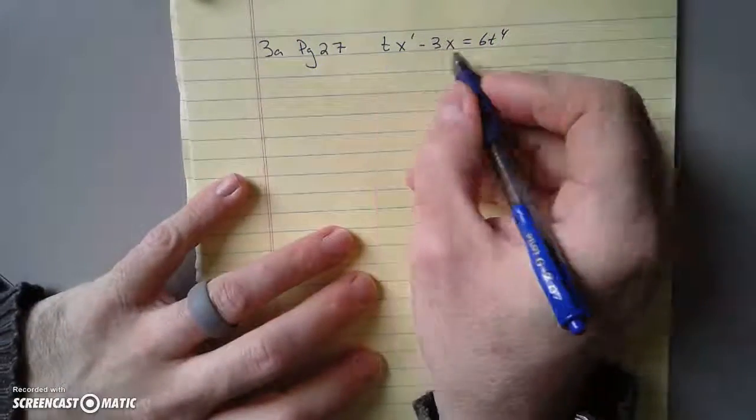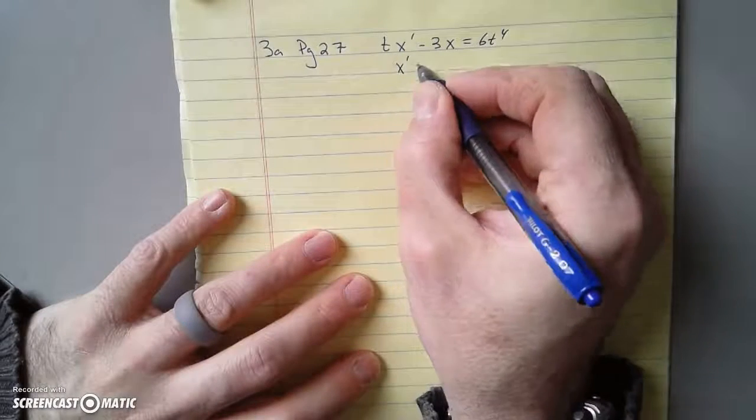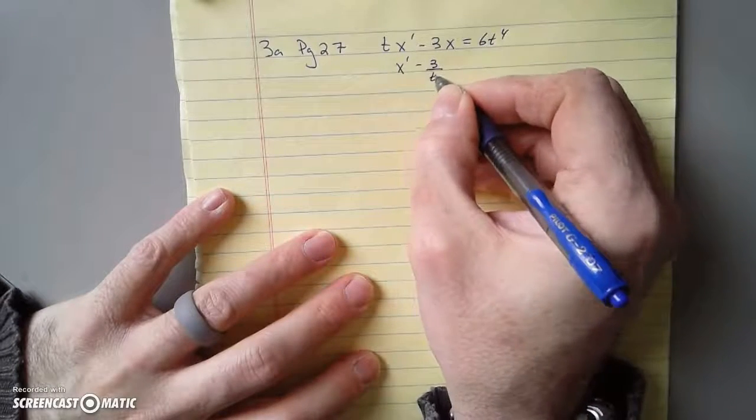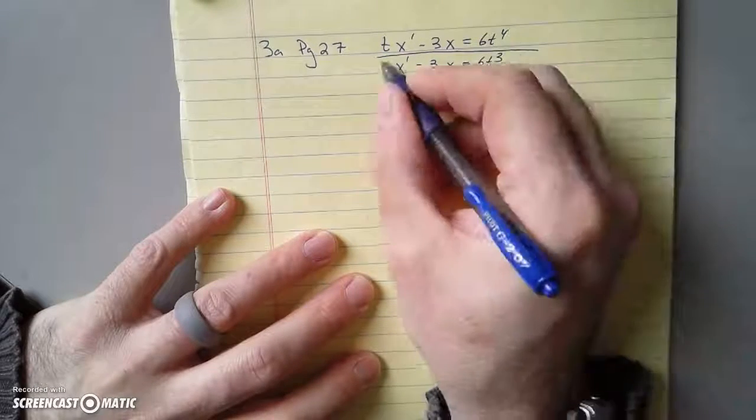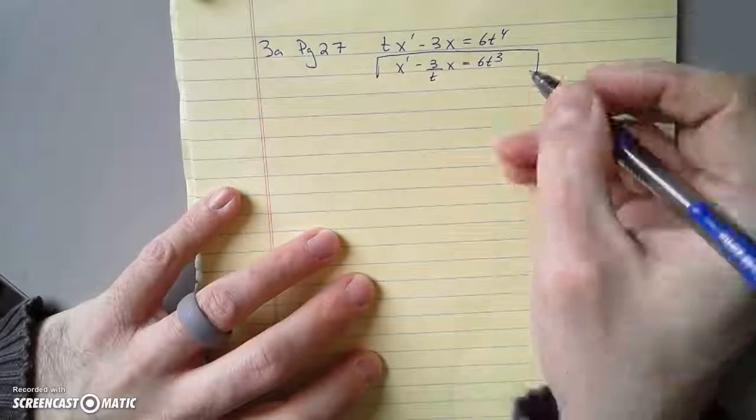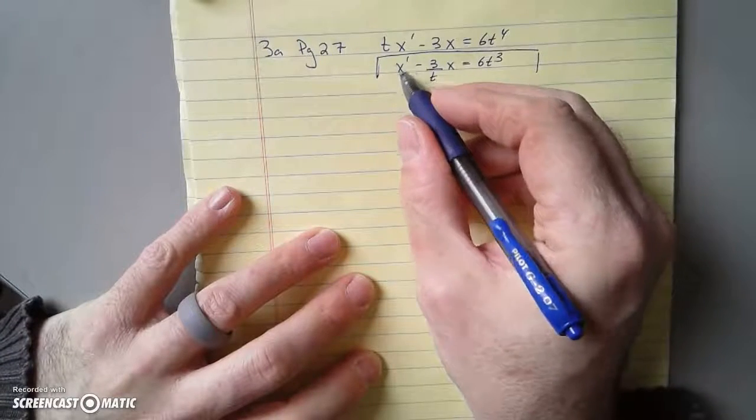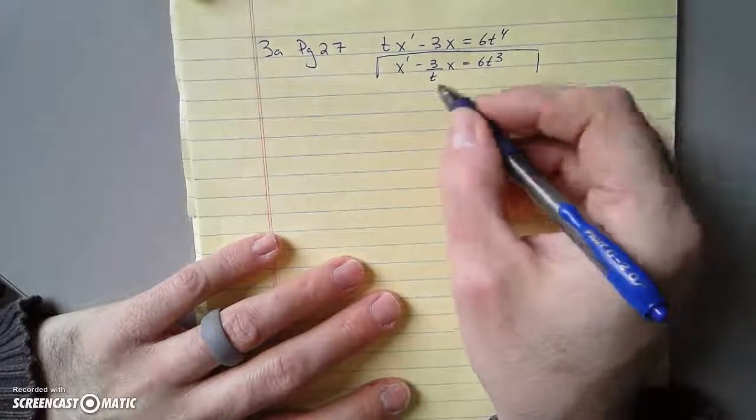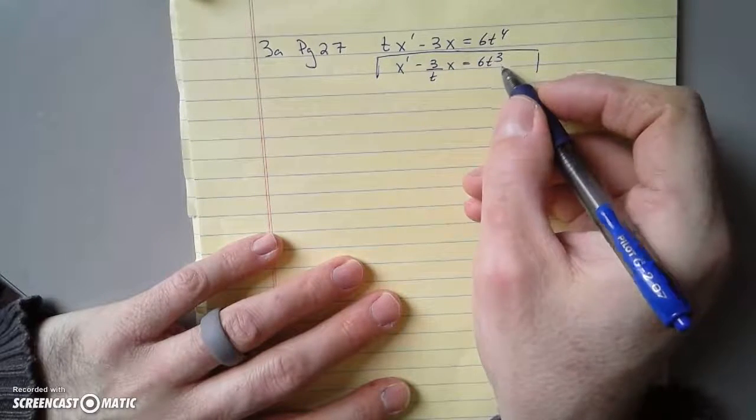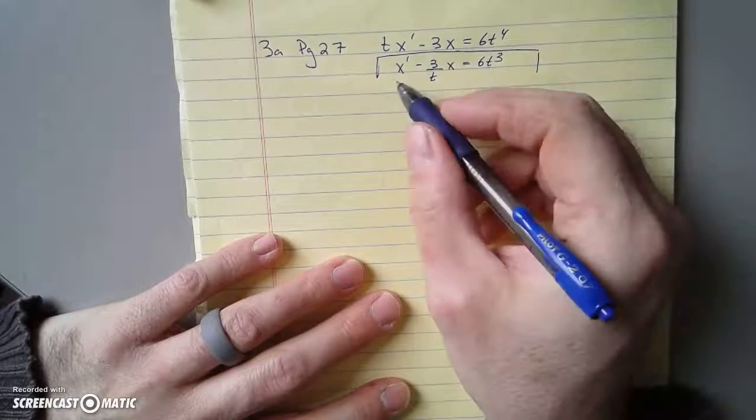Now let's divide through by t. This is x' - 3/t x = 6t^3. So here's our differential equation. It's linear because x' and x are to the first power. It doesn't matter if t is funky, so this is a first order linear.